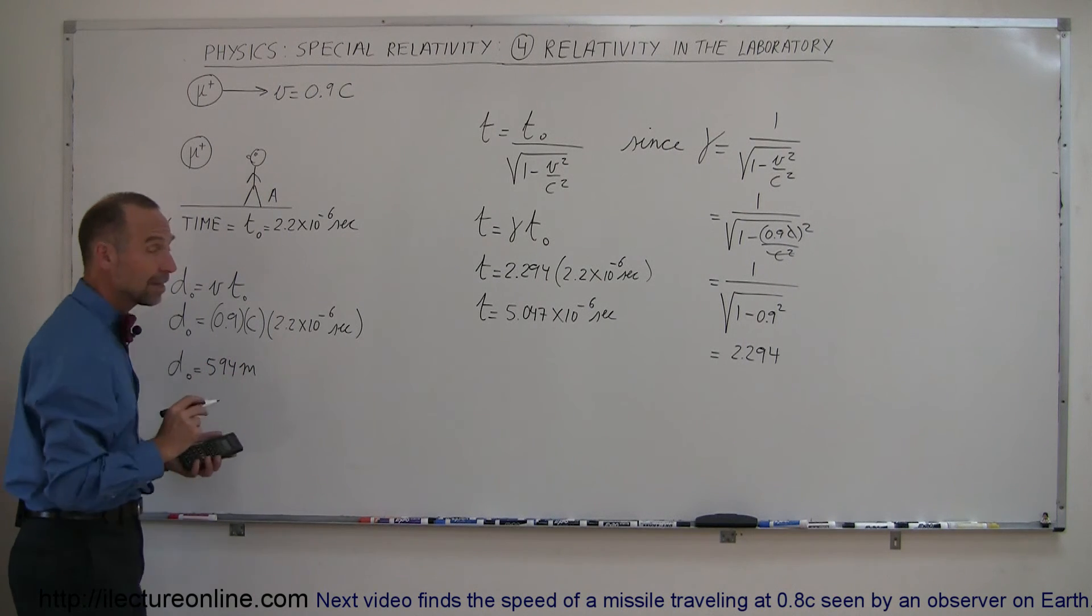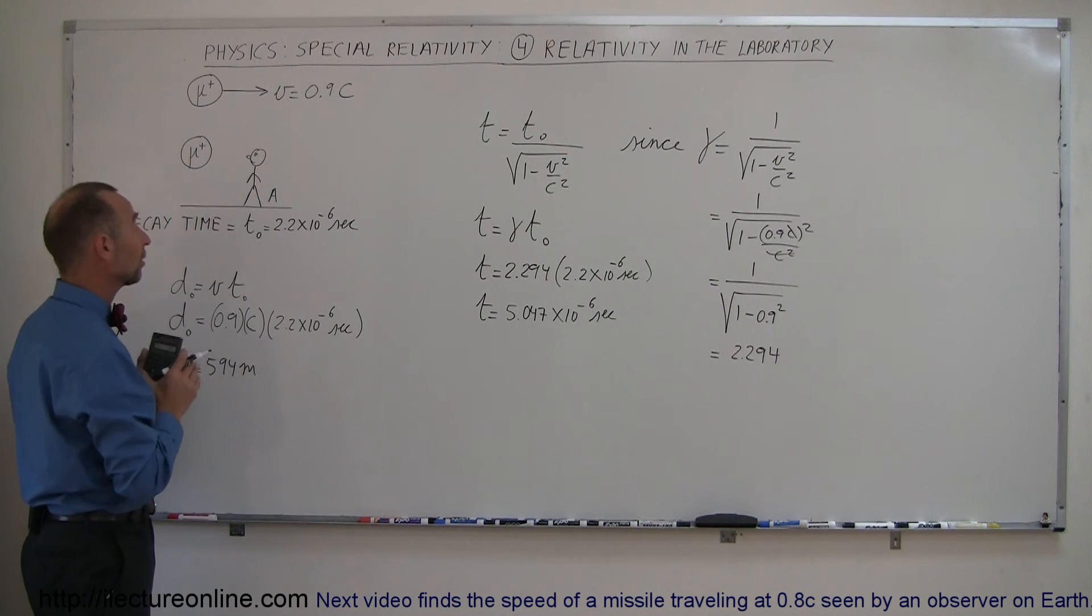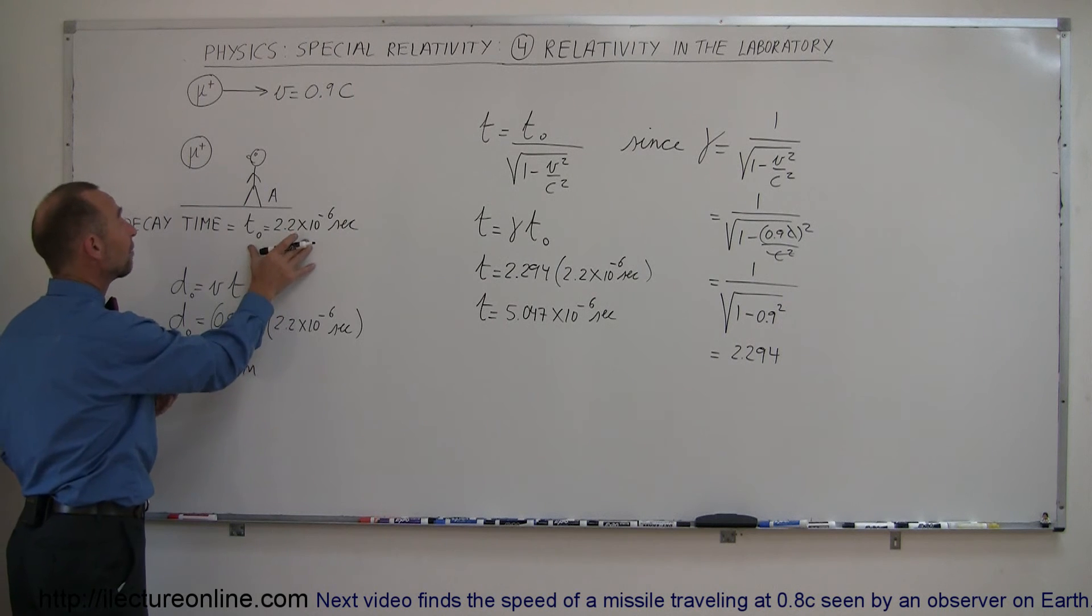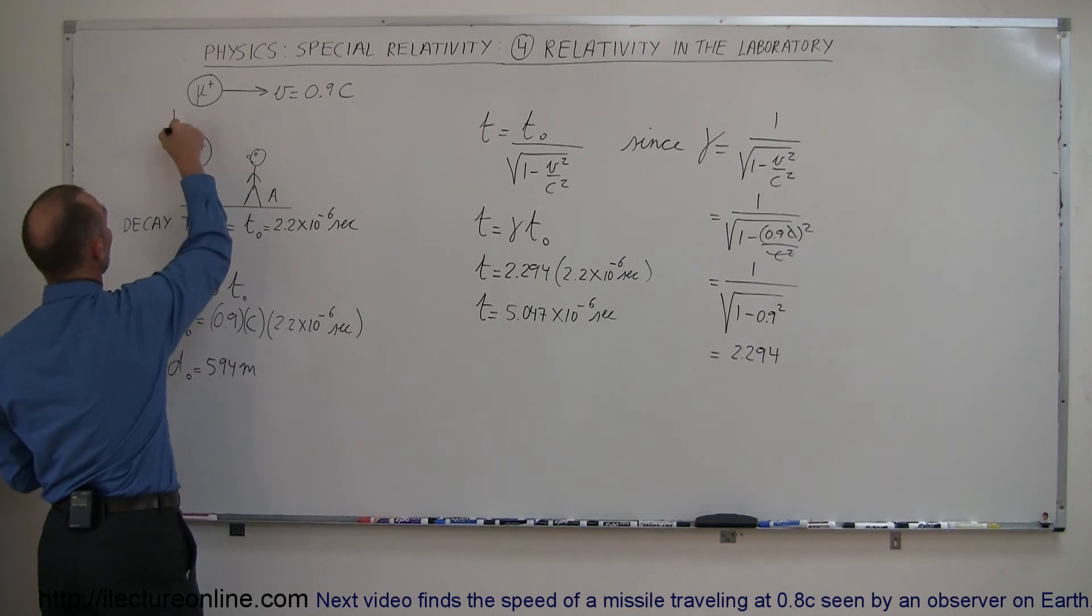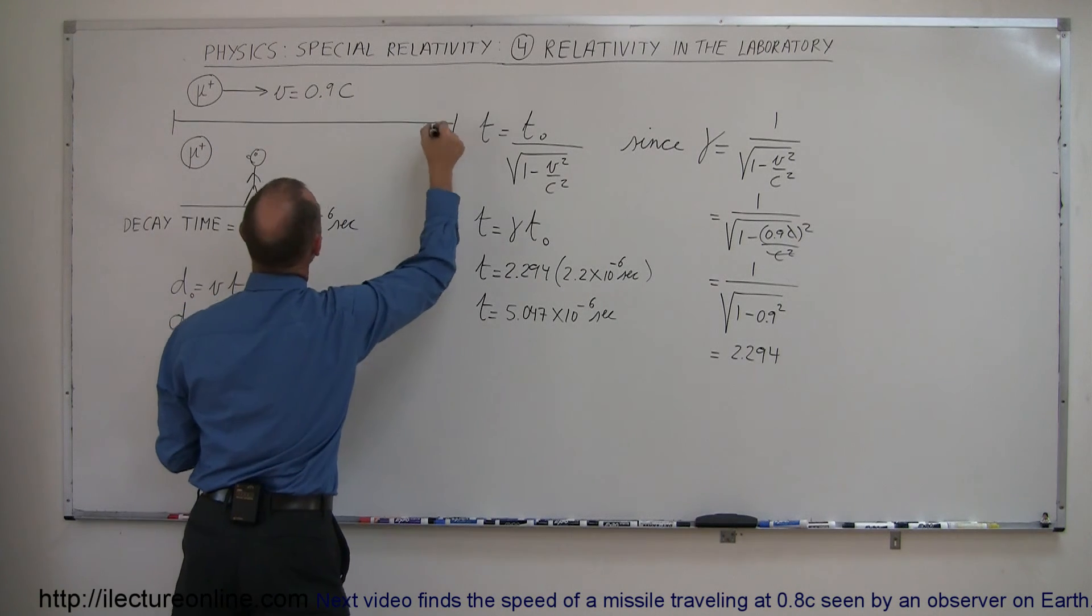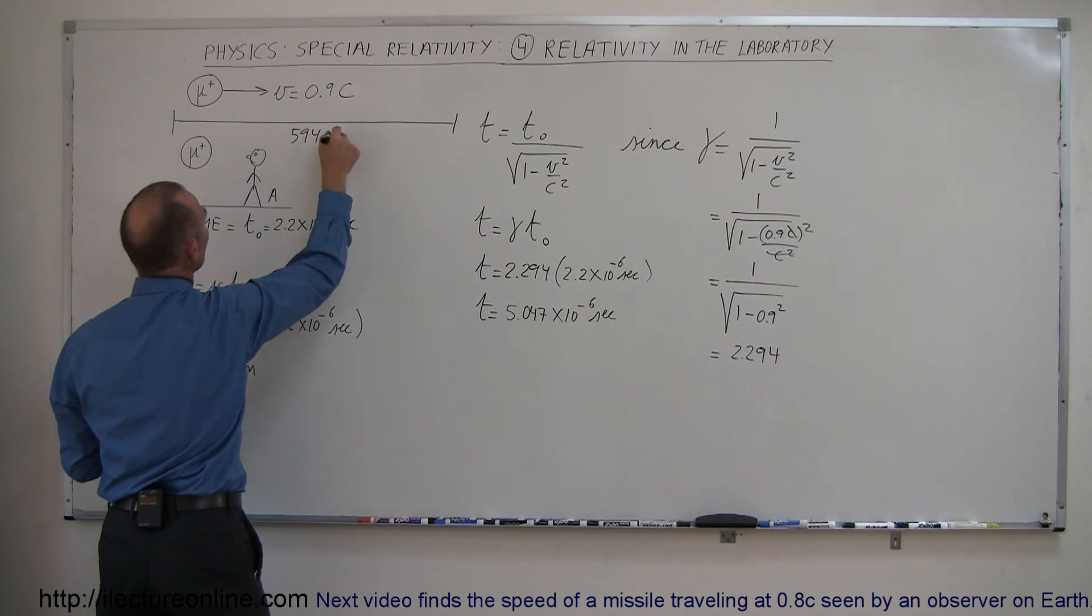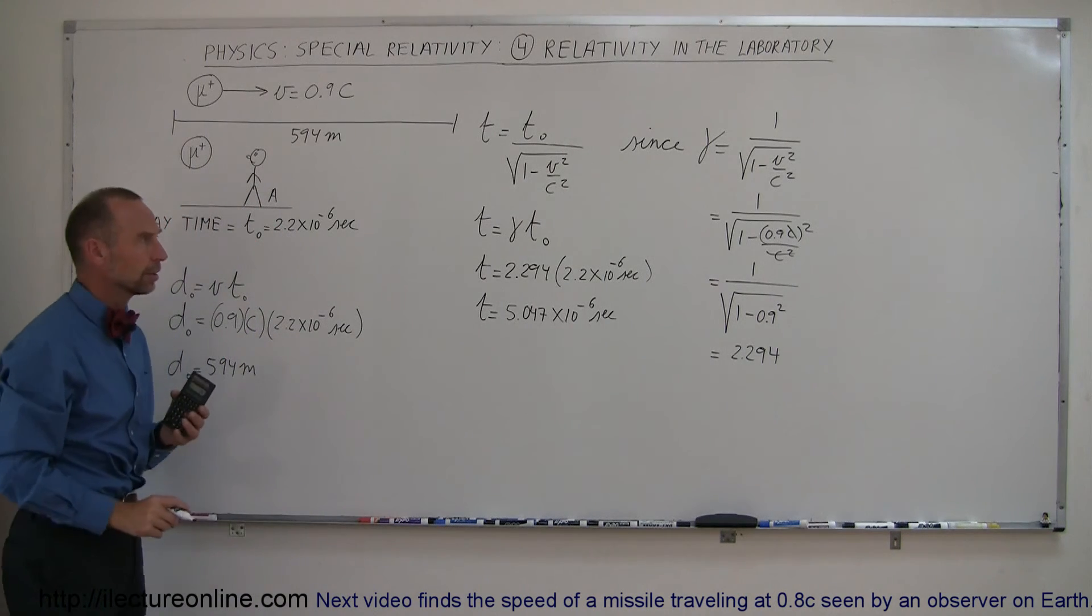So what we can say here is if there were no such thing as relativistic effect, if time did not matter for something moving really fast, then the total distance a particle could travel in the lab would be a distance of 594 meters before it would decay and turn into a different particle.